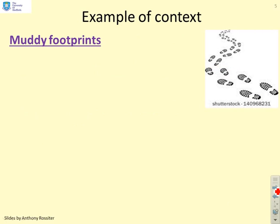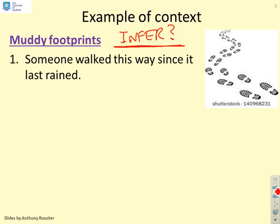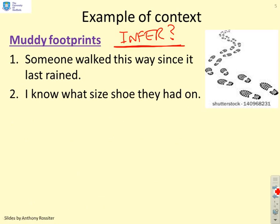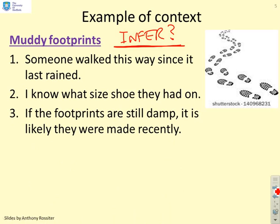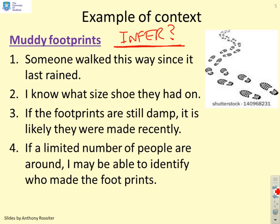Here's the footprints example. I can see the muddy footprints, but what can I infer apart from the fact that they exist? I can infer that someone walked this way since it last rained, because rain would have washed the footprints away. I can infer the shoe size from the size of the footprint. If the footprints are still damp, they were likely made recently, since otherwise they would have dried. If only a limited number of people go on this route, I can shortlist the possible people who made them.